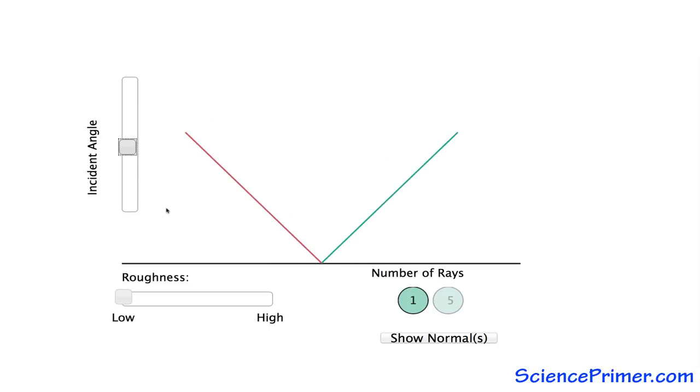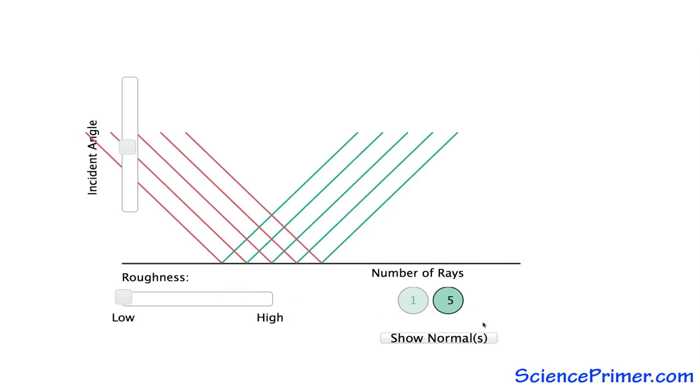On a very smooth surface, lines normal to neighboring points along that surface are parallel to each other. Since the angle of reflection depends upon the orientation of the normal, a set of parallel incident rays encountering a smooth surface will reflect so that the angles of reflection are all the same.